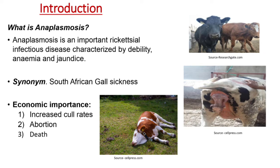Let's begin with the introduction. What is Anaplasmosis? Anaplasmosis is an important rickettsial group of infectious diseases characterized by debility, anemia, and jaundice. It is synonymously known as South African gall sickness. Anaplasmosis may lead to significant economic impacts and can result in increased cull rates within a herd, as well as 20 to 30% loss in body weight in individuals. Abortion and acute death are also marked in Anaplasmosis.